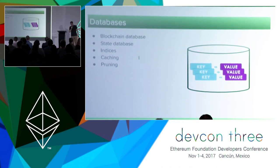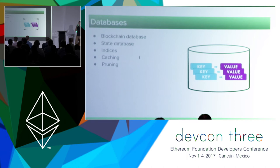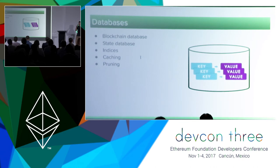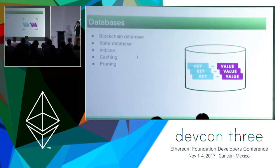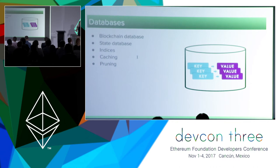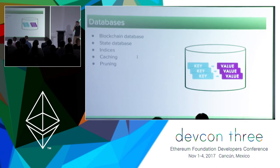Every client needs some persistent storage for the blockchain and state data. Typically clients use a key-value storage database, as this fits naturally all the needs of an Ethereum client. For example, CppEthereum, GoEthereum, and the Python client all use LevelDB. The blockchain stores all blocks and all transactions within those blocks. The state data is orthogonal to that — it is the current information about all accounts and contracts existing in Ethereum: their balances, nonces, contract code, and contract storage.